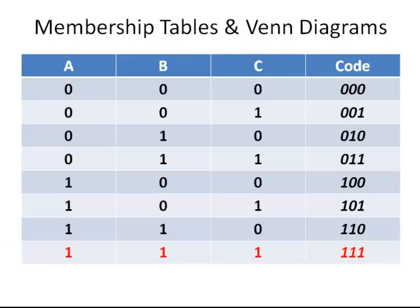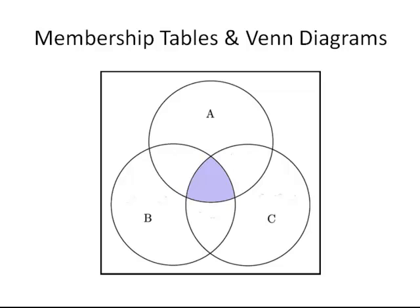And the very last one is 1, 1, 1 — it is a region that is enclosed by A, B and C. So it is the intersection of all three circles. That is how we use the membership table to correspond with Venn diagrams. I am going to take this further in a future presentation but I will stop here for now.